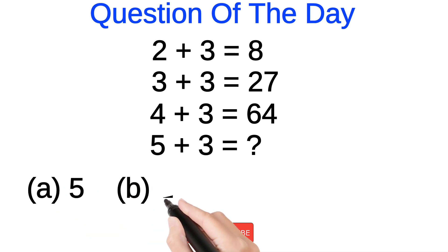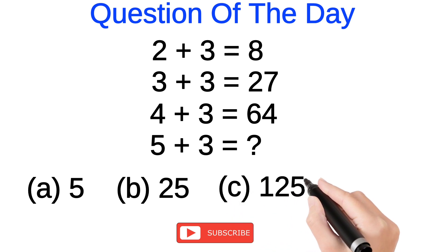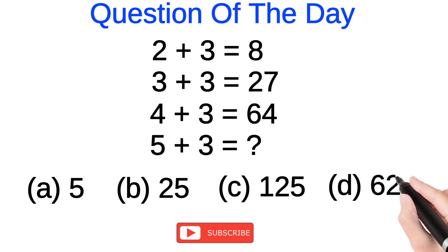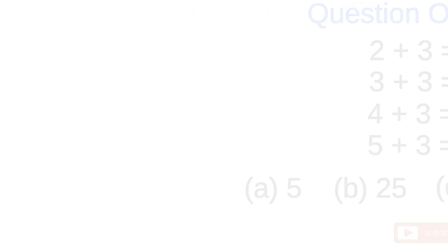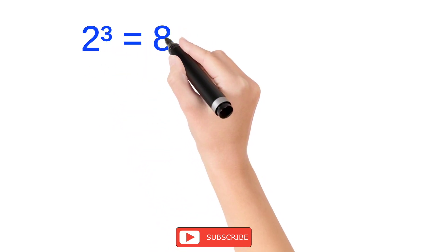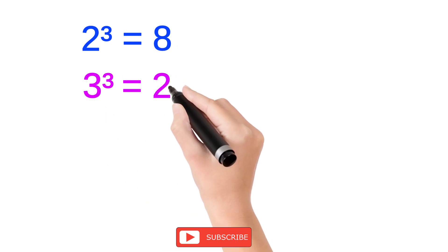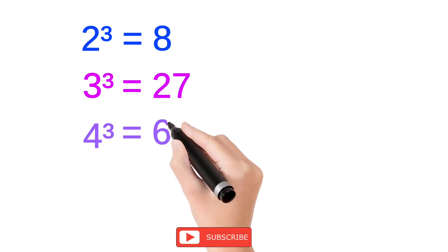3 is the common number which is added at every step of the analogy. So the analogy here is that 2 cubed equals 8, 3 cubed equals 27, 4 cubed equals 64.